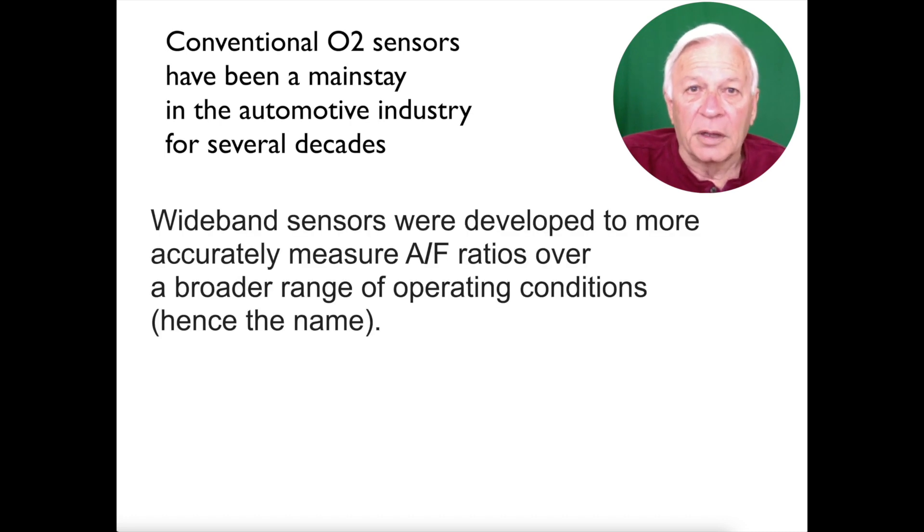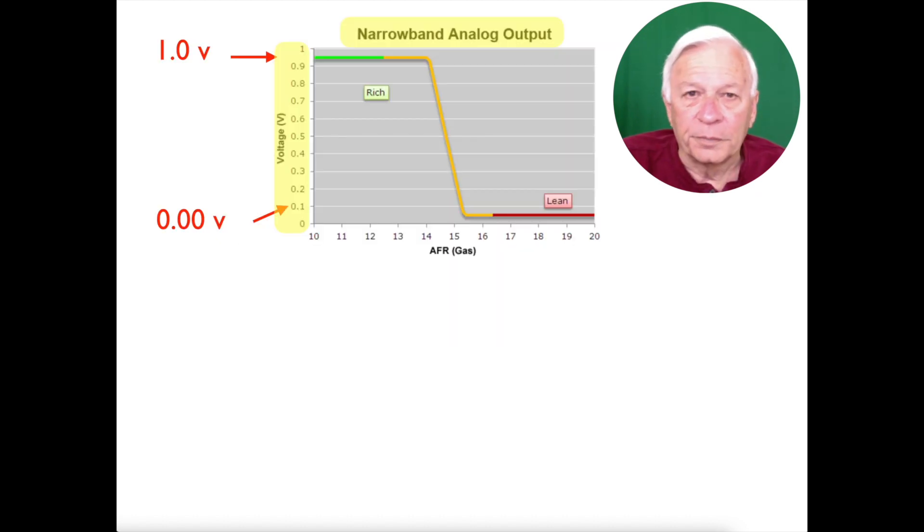Wideband sensors were developed to more accurately measure air-fuel ratios over a broader range of operating conditions. That's why they're called wideband sensors. The narrowband only measures between 0 and 1 volt, crossing over the half pole point repeatedly back and forth as it switches between rich and lean.